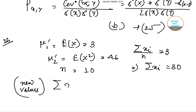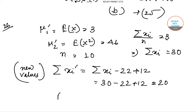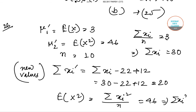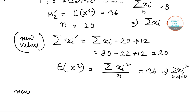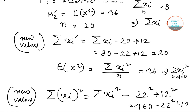Now we add the corrected values. Summation of xi dashed equals summation of xi minus 22 plus 12, which equals 30 minus 22 plus 12, giving us 20. Also, expectation of x square equals summation of xi square by n equals 46, so summation of xi square equals 460. For the corrected summation of xi square: summation of xi square dashed equals 460 minus 22 square plus 12 square.